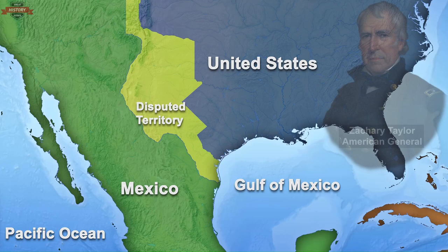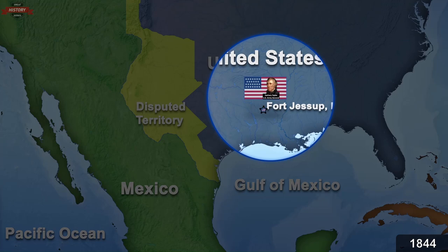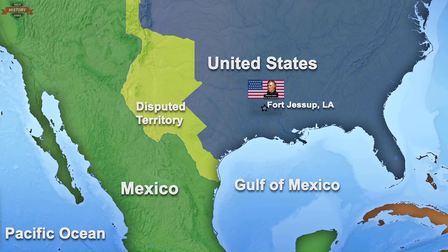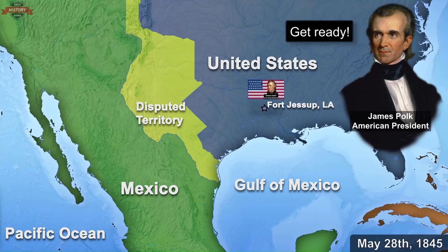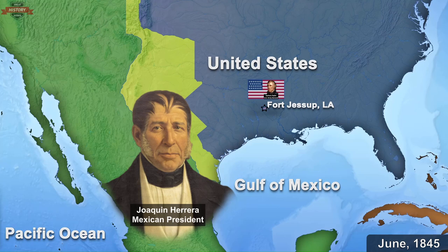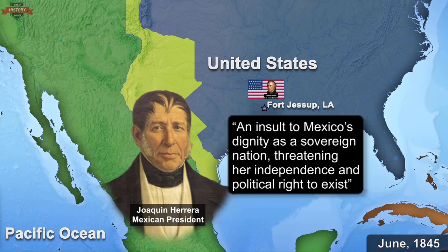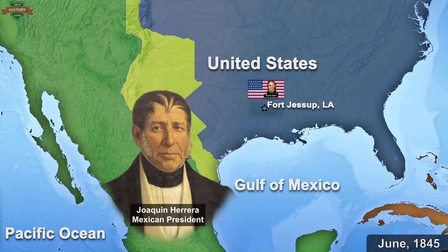Since 1844, General Zachary Taylor and his Army of Observation had been stationed at Fort Jessup, Louisiana, near the border with Texas. On May 28, 1845, knowing the formal annexation of Texas was about to be finalized, James Polk issued orders for General Taylor to get ready to march into Texas. Meanwhile in Mexico, in early June 1845, Mexican President Jose Joaquin Herrera declared American actions in Texas to be an insult to Mexico's dignity as a sovereign nation, threatening her independence and political right to exist. He called upon citizens to defend their country and mobilized the country's military forces in preparation for a fight. However, no declaration of war followed.